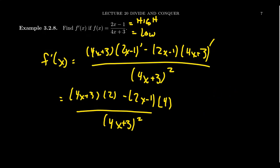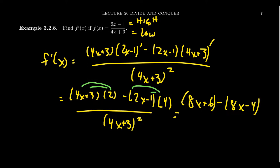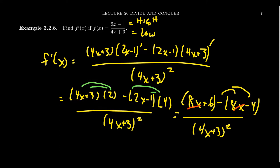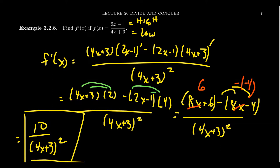The right approach is to distribute. We distribute the 4 into (2x − 1) to get 8x + 6, then distribute the minus sign into 4 times (2x − 1) — be careful, the minus sign distributes onto all pieces — giving us minus 8x minus 4. The 8x and minus 8x cancel, leaving 6 − (−4) = 6 + 4 = 10. So the derivative simplifies to 10 / (4x + 3)² using the quotient rule.